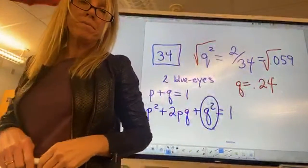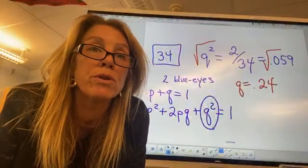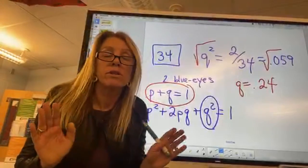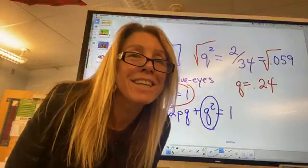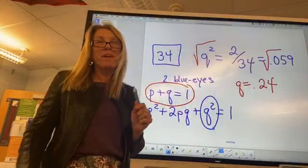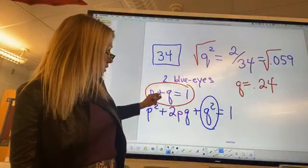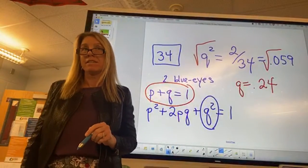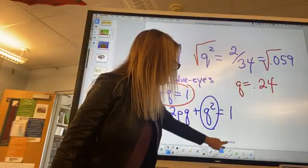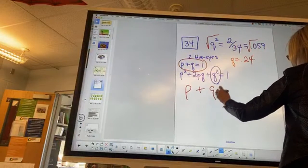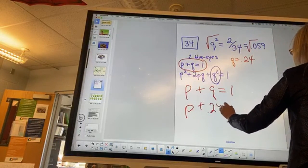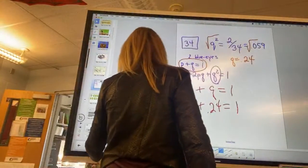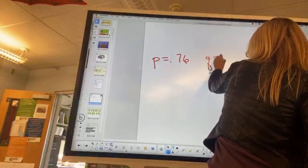Now that Q equals 0.24, you look at P plus Q equals 1. So P equals 1 minus 0.24, which is 0.76. So P equals 0.76 and Q equals 0.24.